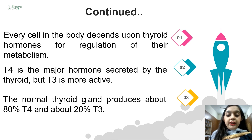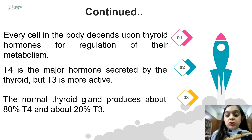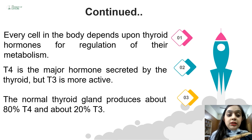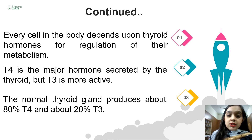Every cell in the body depends upon thyroid hormones for regulation of their metabolism. T4 is the major hormone secreted by the thyroid gland — approximately 80% of total thyroid hormone produced is T4, while T3 accounts for only 20%. However, when we talk about potency, T3 is four times more active than T4. Almost all thyroxine in the body is eventually converted into T3 in tissues when required for maintenance of metabolism.